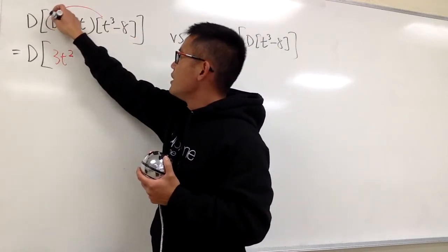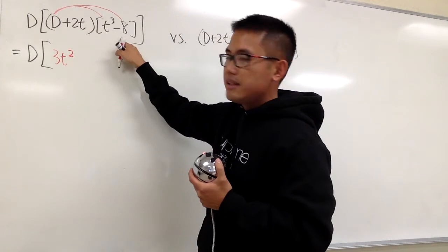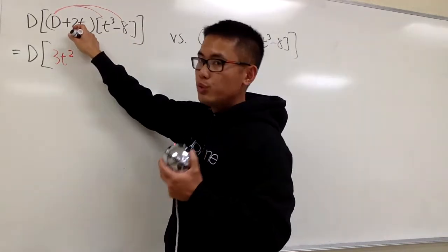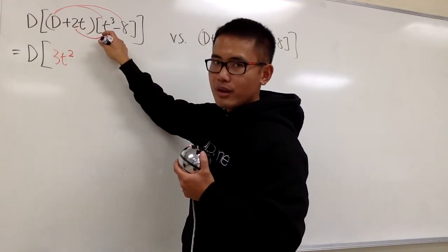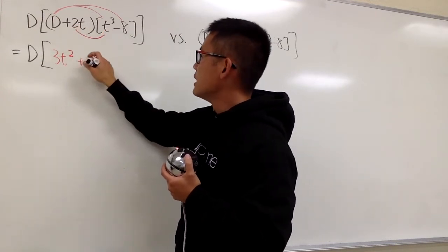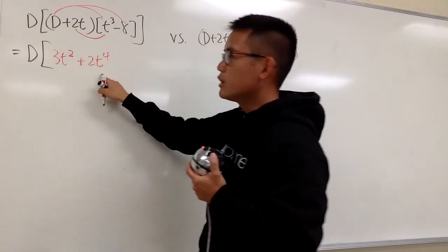The derivative of negative 8 is 0, so it doesn't matter. Then this is regular 2T. You multiply 2T and T to the third power, and we end up with plus 2T to the fourth power when you multiply them.